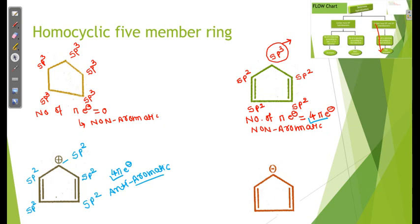Let us see another example. Here the hybridization is: sp2, sp2, sp2, sp2, sp2, sp2 — all sp2. When all are sp2, we are very happy, because we have two pathways: either aromatic or anti-aromatic, depending on the number of pi electrons. Here we have 6 pi electrons. With 6 pi electrons and all sp2, this compound is aromatic.